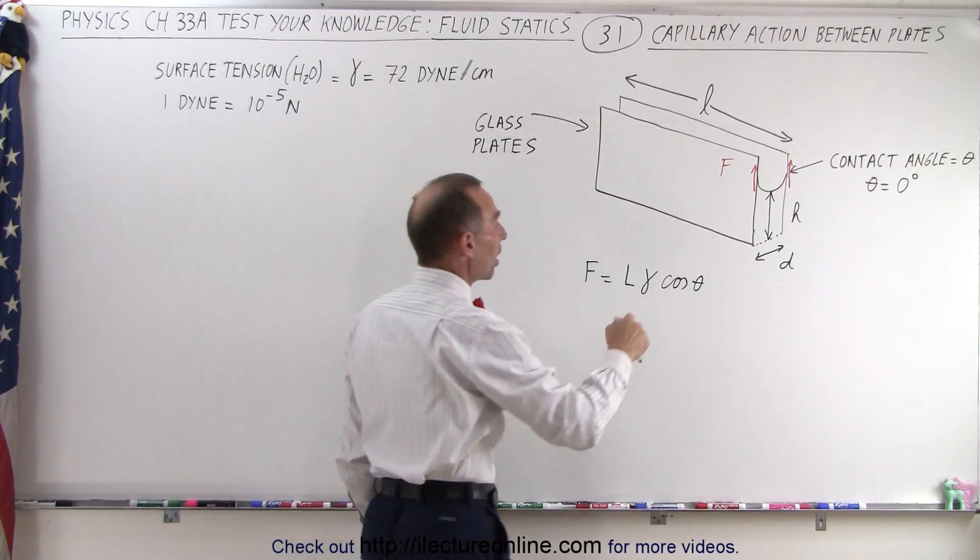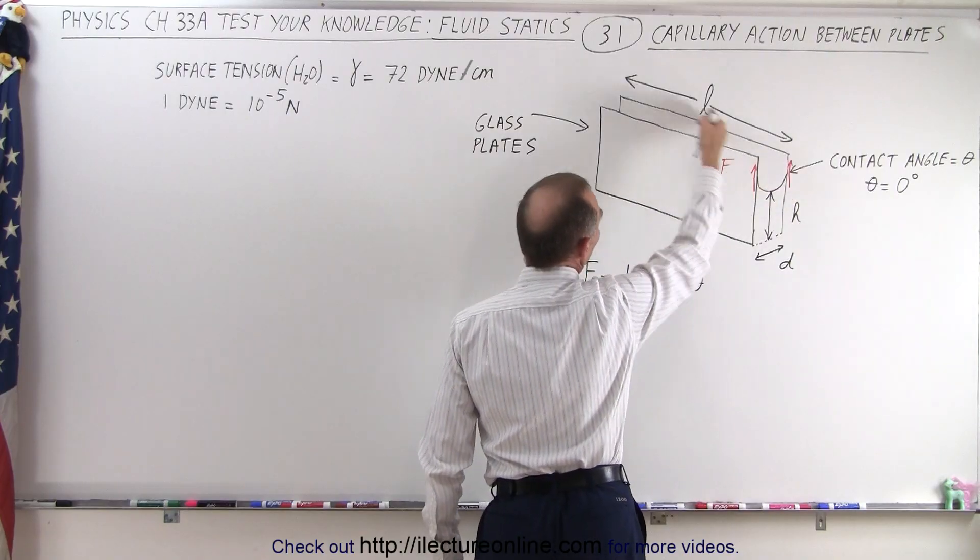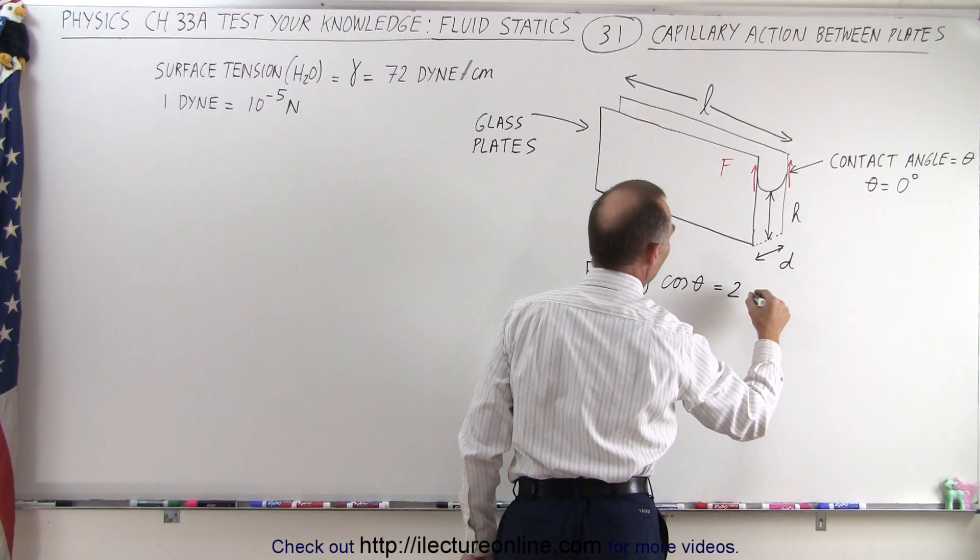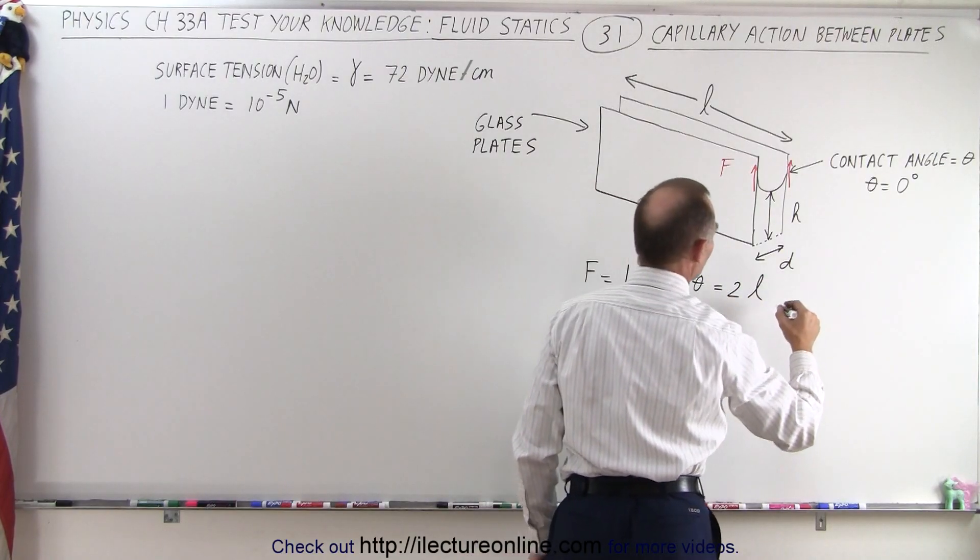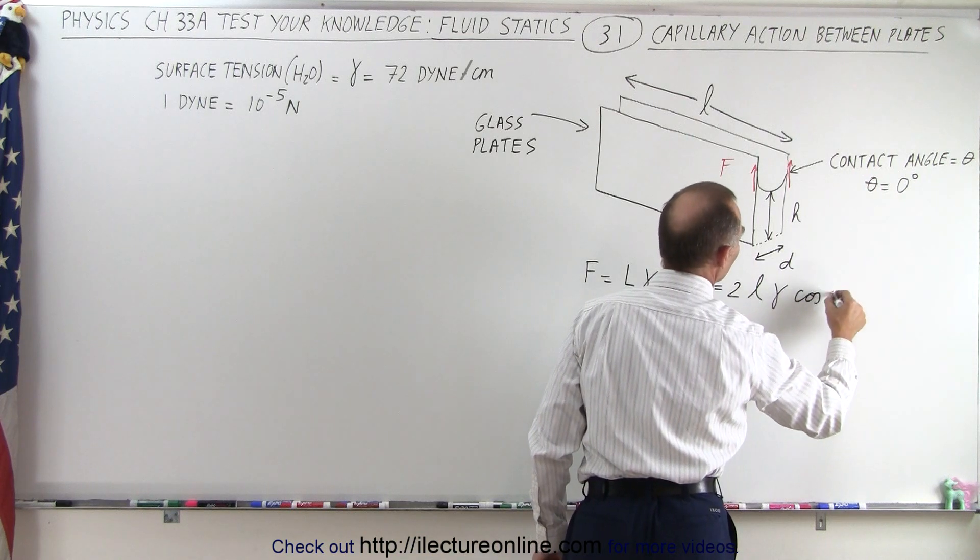Now in this case, the contact length is going to be twice the length of the plate. The length of the plate on one side, the length of the plate on the other side, so it's being pulled on both sides. In this case, that's going to be 2 times the length of each plate times the surface tension times the cosine of the angle.